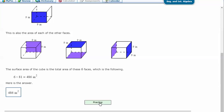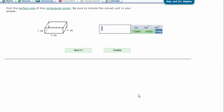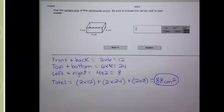Let's try another one. Find the surface area of this rectangular prism. Be sure to include the correct unit in your answer. For my notes, I just printed out the original problem.